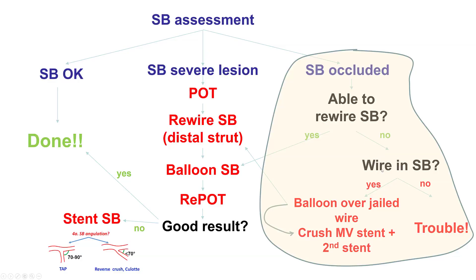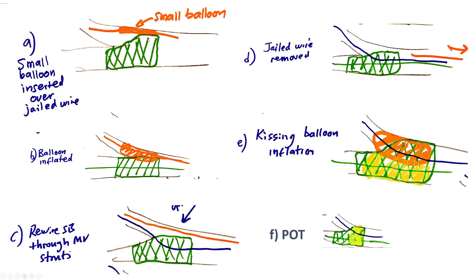What happens if we are unable to rewire the side branch? One potential solution is to advance a small balloon over the jailed guide wire. This can potentially restore some antegrade flow, and then one can hopefully rewire into the branch and proceed with kissing balloon angioplasty and a final POT.